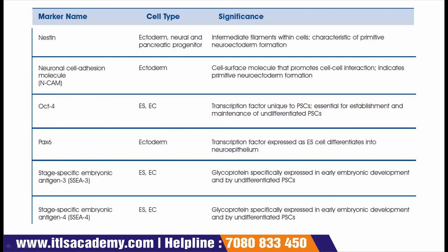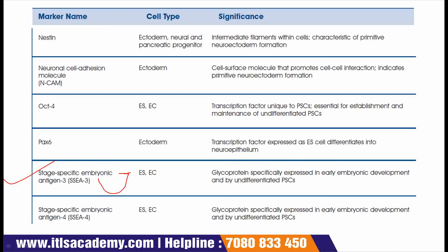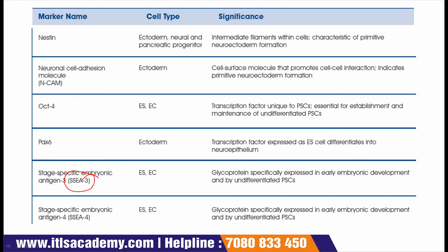The next markers are SSEA3 and SSEA4, very important markers in regenerative medicine. SSEA3 is stage specific embryonic antigen 3, and SSEA4 is stage specific embryonic antigen 4. Both are present on embryonic stem cells and carcinoma cells. SSEA3 is a glycoprotein — a protein attached with glucose — expressed in early embryonic development and by undifferentiated pluripotent stem cells. SSEA4 is similarly a glycoprotein expressed in early embryonic development and by undifferentiated pluripotent stem cells.